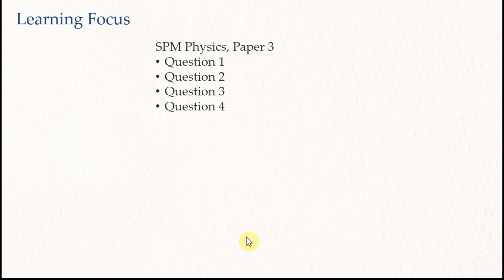There are a total of four questions in SPM Physics Paper 3. Question one and question two are compulsory questions. You need to answer both of them. Question three and question four are selective questions. You only need to answer one of the questions according to your choice.